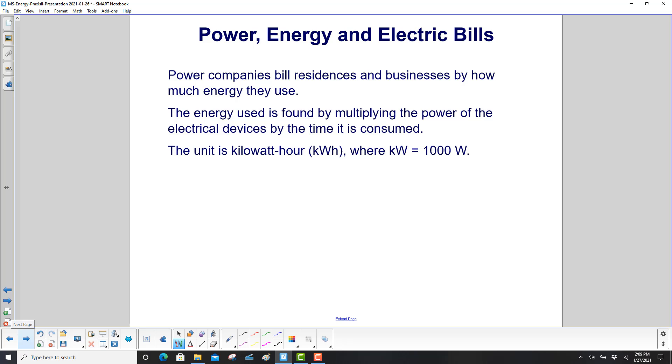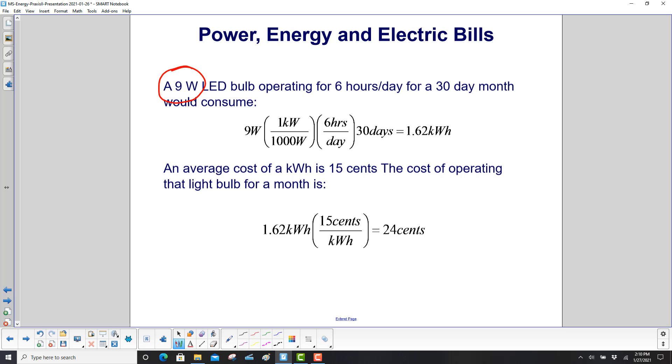Let's relate this now to everyday life, especially if you are paying electric bills. Power companies bill residences and businesses by how much energy they use. You are getting billed for the energy. The energy used is found by multiplying the power of your electrical devices by the time that the energy is consumed. The unit is kilowatt hours, where 1 kilowatt equals 1000 watts. A 9 watt LED bulb, like we showed earlier, which is replacing the old 60 watt incandescent bulbs, that operates for 6 hours a day for a 30 day month, would consume, let's do some unit cancellation here. We have a 9 watt bulb, we have 1 kilowatt is 1000 watts, so the watts will cancel, 6 hours a day, and then we want to do it for 30 days. So that, the days cancel. So that gives us 1.62 kilowatt hours for a month.